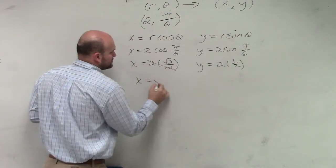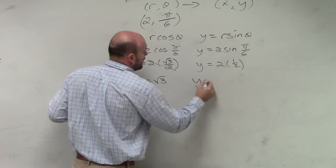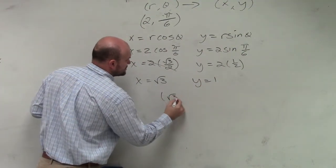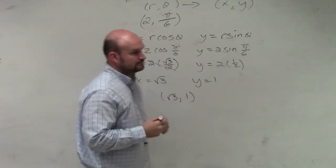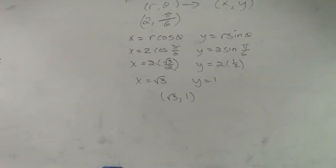So x equals the square root of 3, y equals 1. So my point is square root of 3 comma 1. That's it. Done.